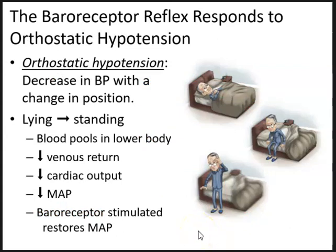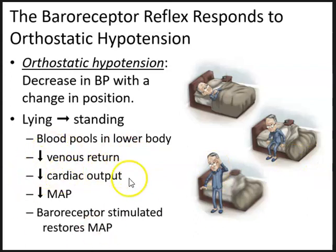The baroreceptor reflex responds to orthostatic hypotension. Orthostatic hypotension occurs when there is a decrease in blood pressure with a change in position, specifically from lying down to abruptly standing. This usually affects young fit women, elderly patients with blunted baroreceptors, or fit athletes that already have low blood pressure. These groups have a tendency to faint. Orthostatic hypotension occurs when there is blood pooling in the lower body caused by decreased venous return, a decrease in cardiac output, and a decrease in mean arterial pressure. The baroreceptors are stimulated to help restore mean arterial pressure, making the baroreceptor reflex important for regulating MAP quickly in the short term.